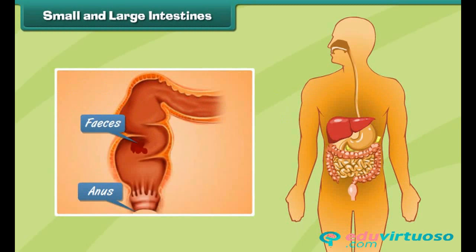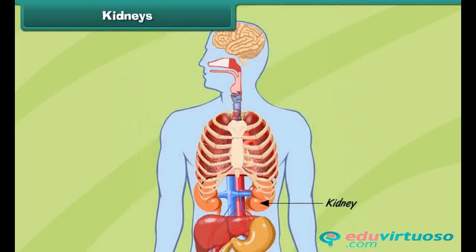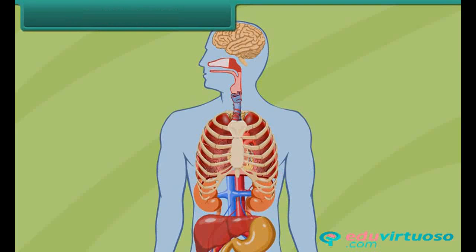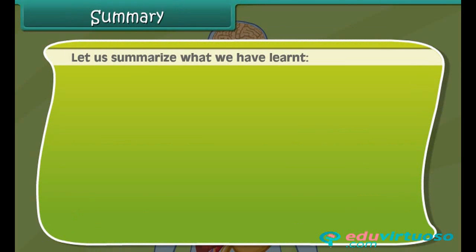The kidneys are organs that keep our blood free from unwanted substances called wastes. The human body has a pair of kidneys, located just below the ribcage — one on either side of the body. The kidneys remove wastes from the blood and various body parts, and thus keep us healthy.